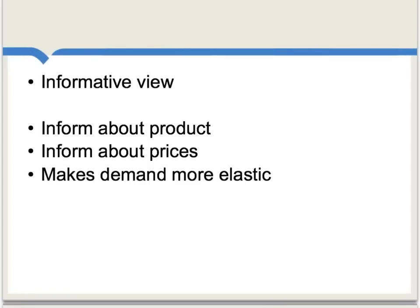There are three fundamental theoretical views about what advertising does. The first is called the informative view, or the information theory. As mentioned, advertising can tell customers about products and prices. Because it leads to more information, this kind of advertising tends to make market demand more elastic and more responsive to price. This kind of advertising is usually considered welfare improving.